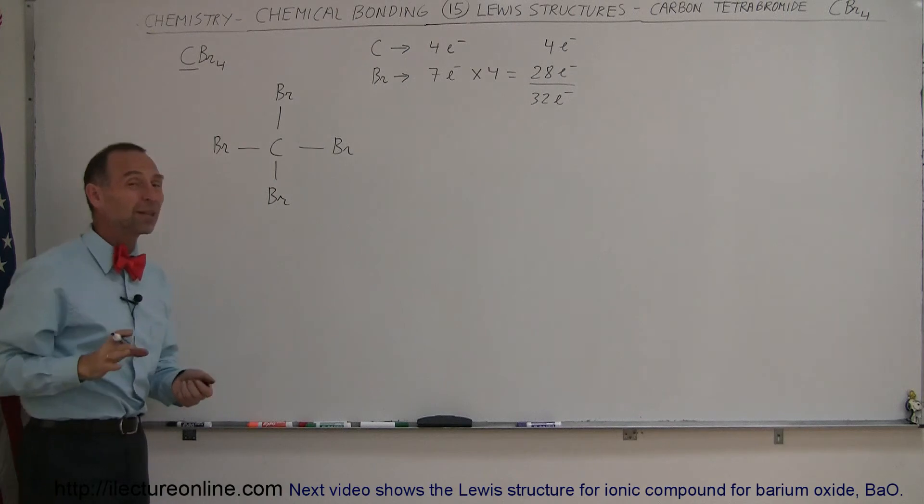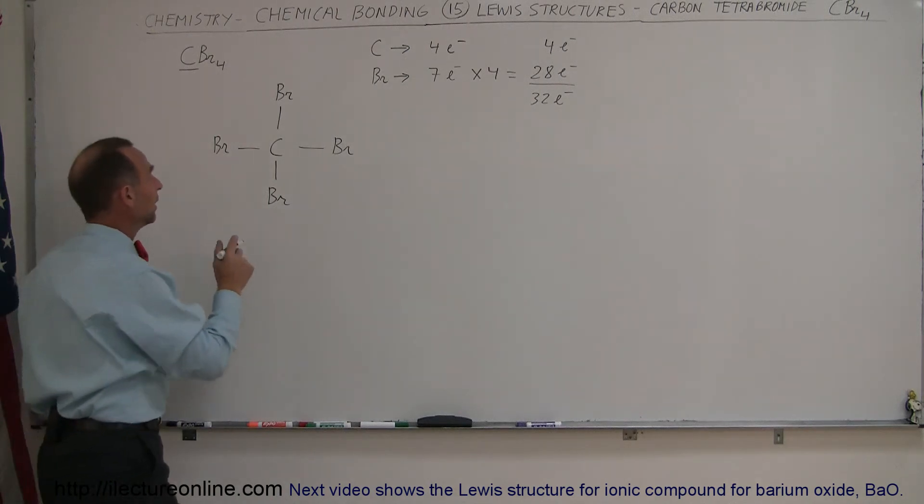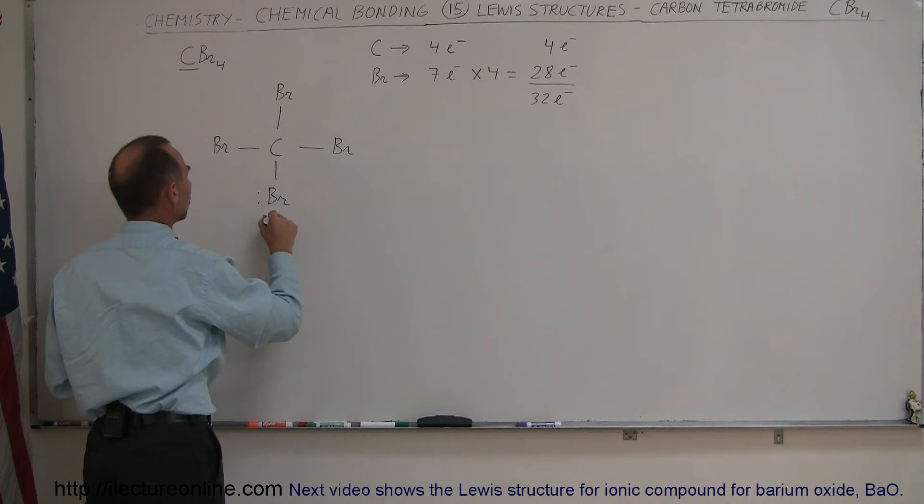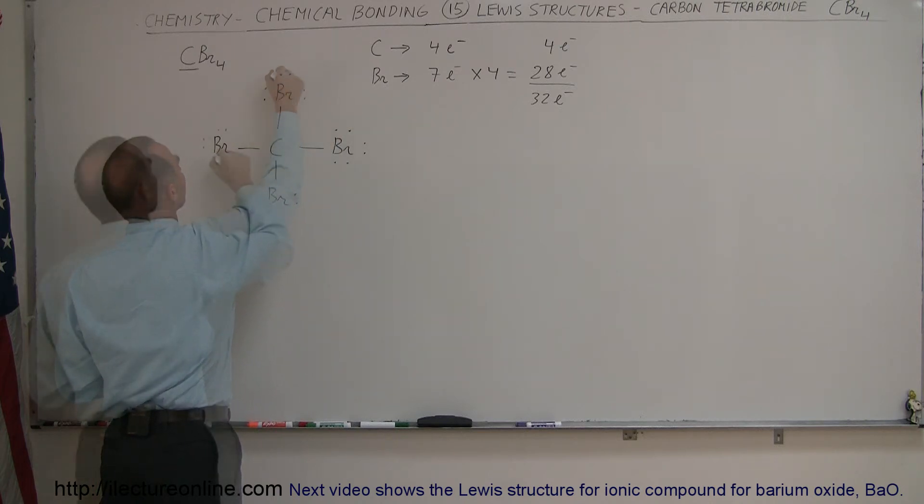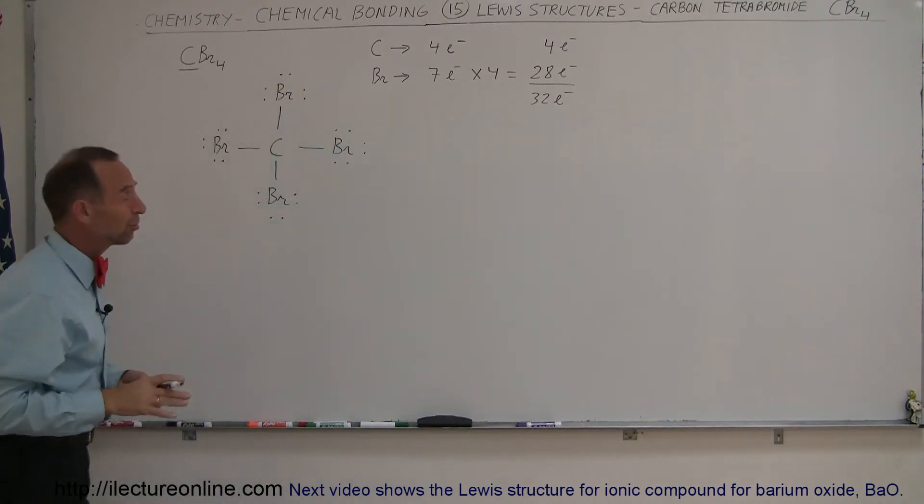And that's probably the correct structure. Now, that means that each bromine atom has six more additional electrons not involved in the bonding. So we can go ahead and indicate them like such. And that's probably the Lewis structure.